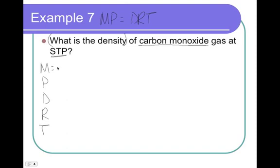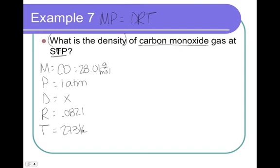So, M, P, D, R, T. Molar mass of carbon monoxide, that's CO. So, 12.01 plus 16, 28.01 grams per mole. Pressure at STP, pressure is 1 atmosphere. Density, that's what the question is asking us for. R is still 0.0821. And temperature at standard temperature is 0 degrees Celsius or 273 Kelvin. So, we actually have all the numbers that we need, even though we didn't have officially, technically, a single number in the whole question.